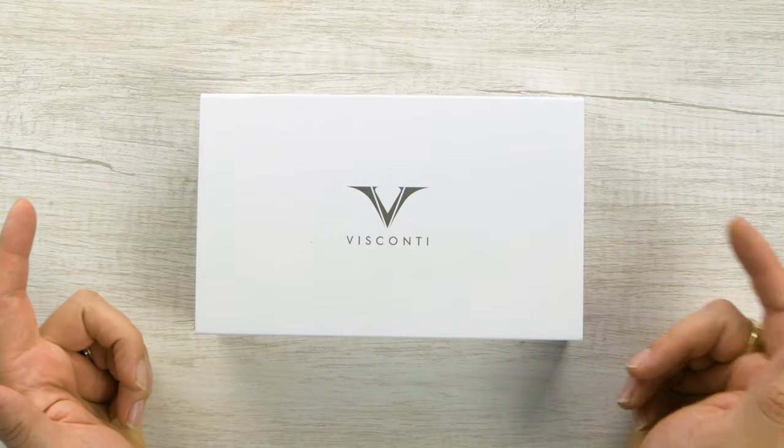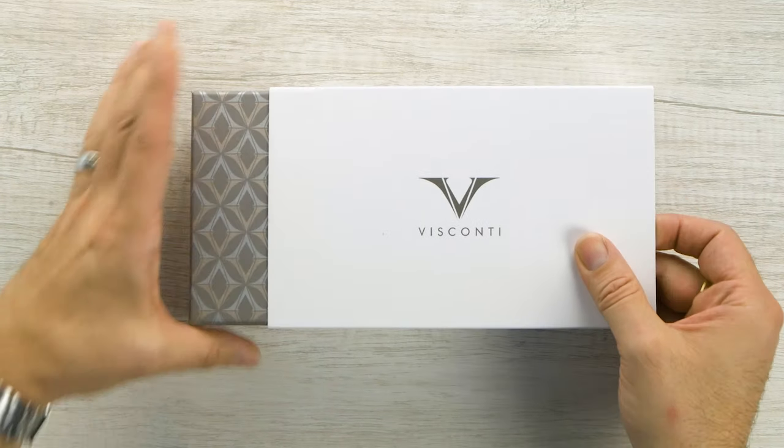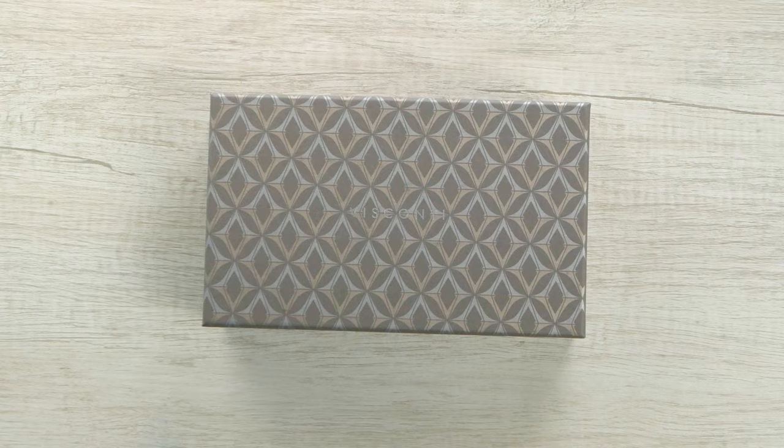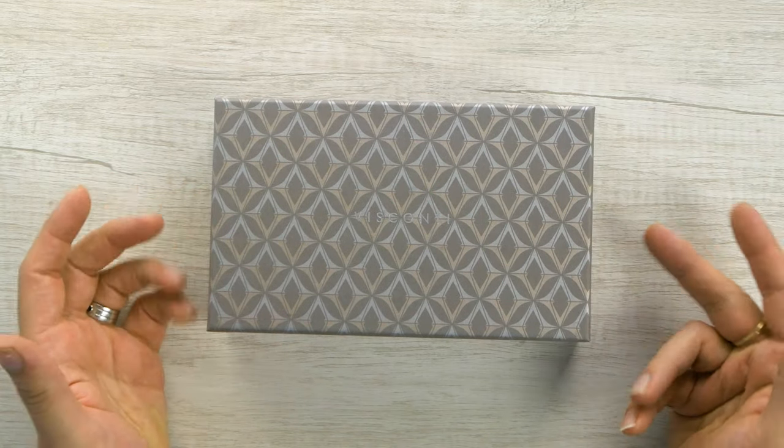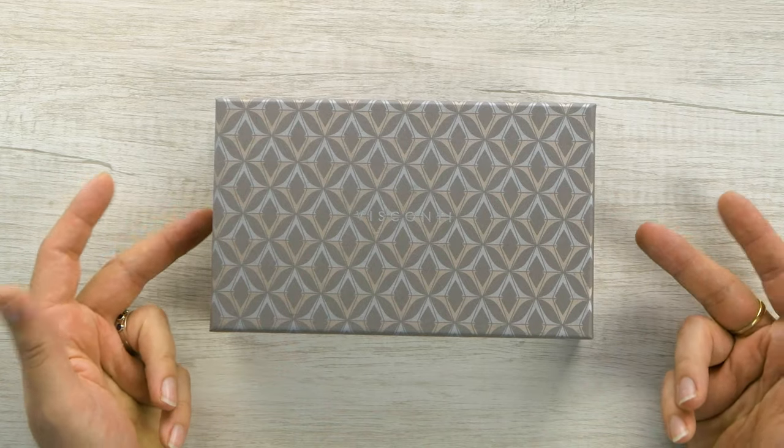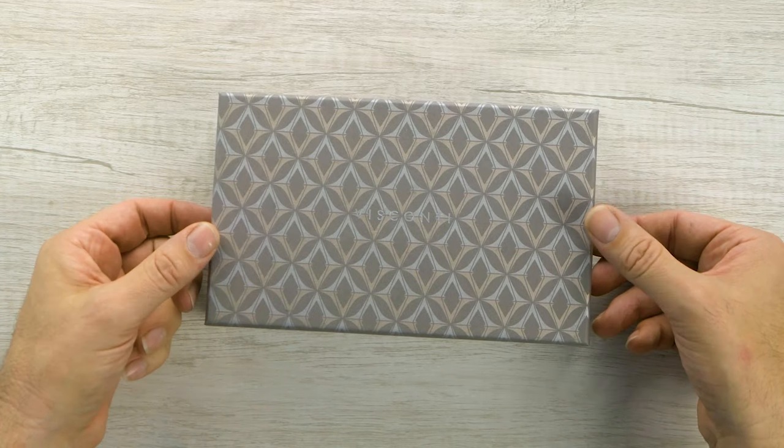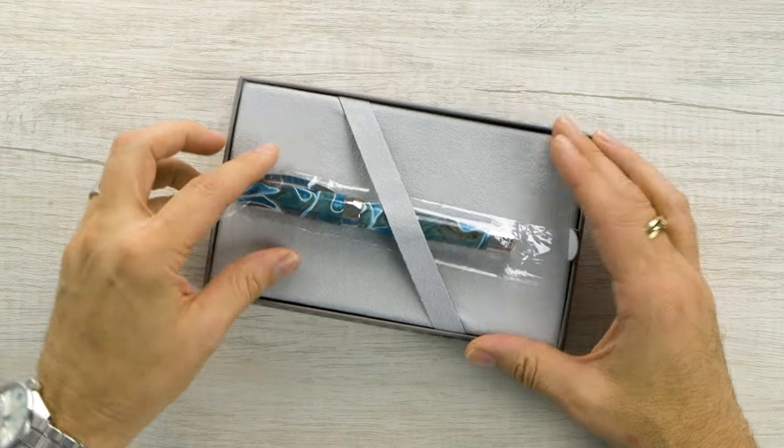So let's take a look at the Visconti Opera Master Polynesia. It comes in a really nice new box. We've got the V logo here, kind of an art deco style. Really quite attractive. Let's open it up.